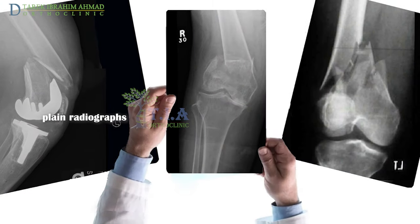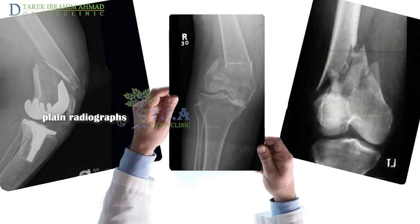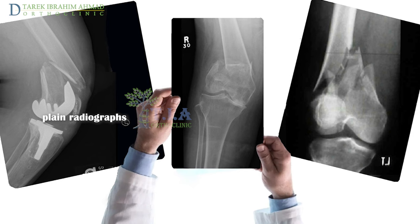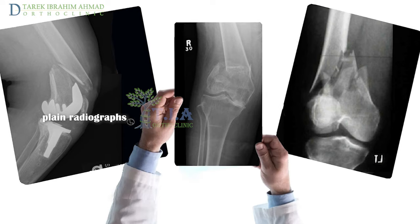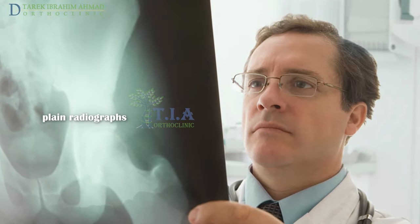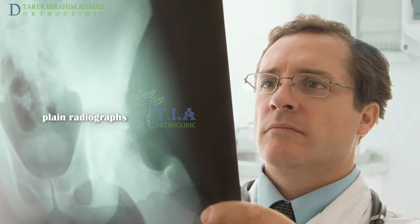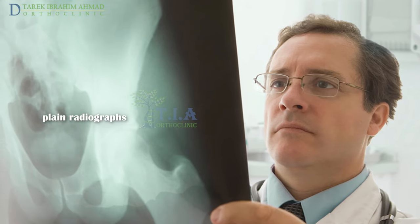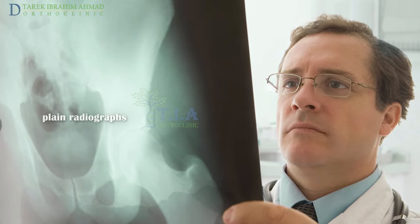Anterior, posterior, and lateral plane radiographs of the thigh should be obtained when a fracture is suspected. Careful radiographic examination in at least two planes is necessary to determine the exact site and configuration of the fracture pattern. The hip and ankles should also be examined with radiographs to rule out associated injury. A femoral neck fracture may occur in association with a distal femur fracture and, if overlooked, can result in significant morbidity and even mortality.